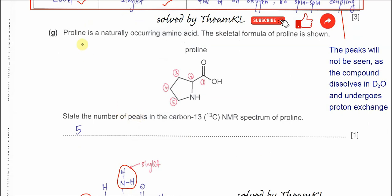Part G. We have another amino acid shown as a skeletal formula. We need to state the number of peaks in the carbon-13 NMR. We need to find the number of non-equivalent carbons. From this structure, all the carbons are non-equivalent: carbon one, two, three, four, five — five different carbons in five different chemical environments. So it will form five peaks in the carbon-13 NMR.